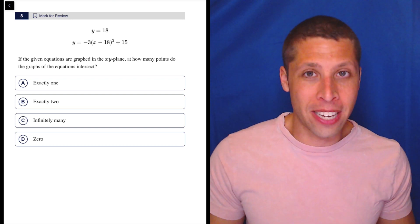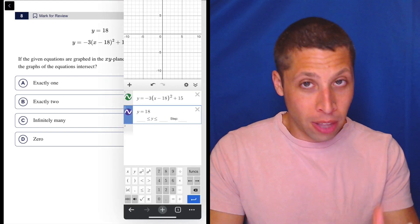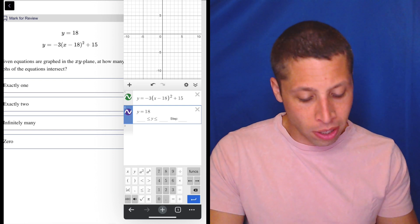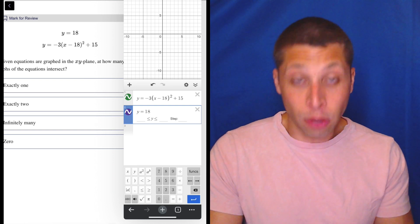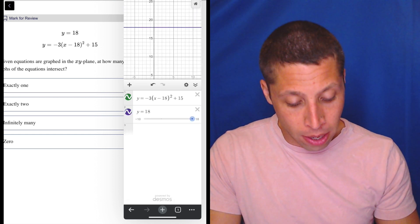And so we should just plug this into Desmos. There's no reason not to. So we could think about vertex form, but let's not. I've already put it in here. There's my two equations. I flipped the order, but it doesn't matter. And I don't see anything. And that's because y equals 18 is high up. So we got to move around. And there it is.